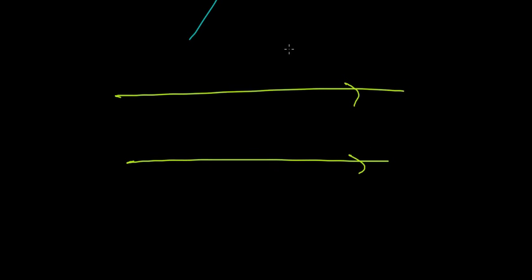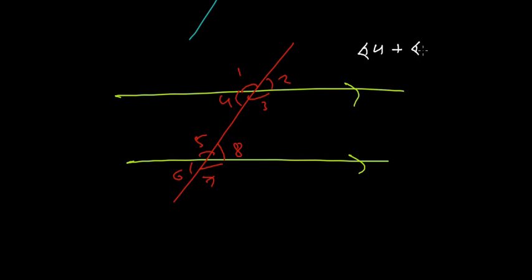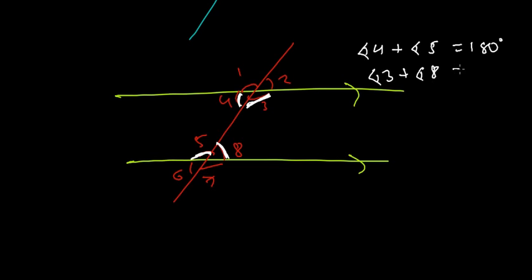Now here's a simple figure with two parallel lines. The angles are labeled: angle 1, 2, 3, 4 at one intersection and angle 5, 6, 7, 8 at the other. Pause the video and find the co-interior angle pairs. The answer: angle 4 plus angle 5 equals 180 degrees, and angle 3 plus angle 8 equals 180 degrees. These are the two co-interior angle pairs whose sum is 180 degrees.